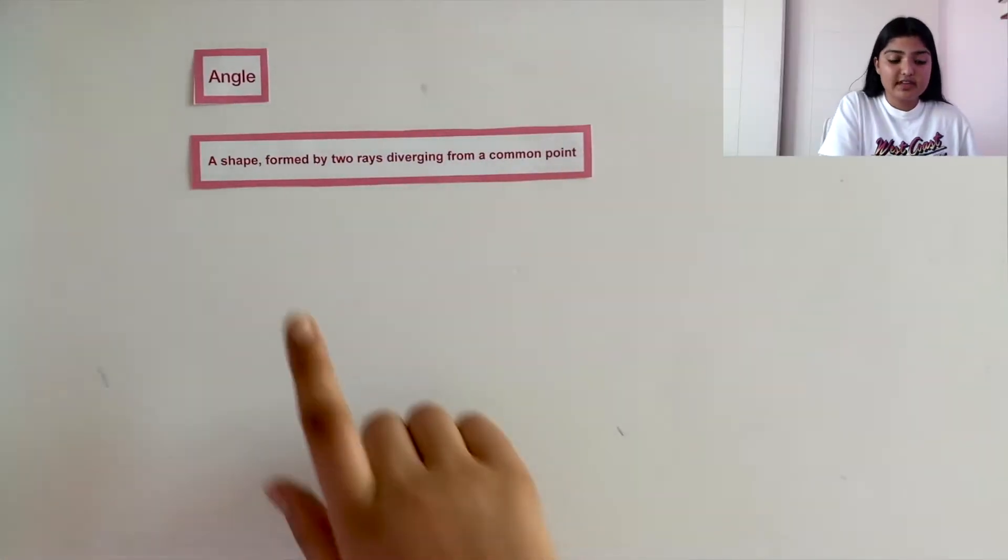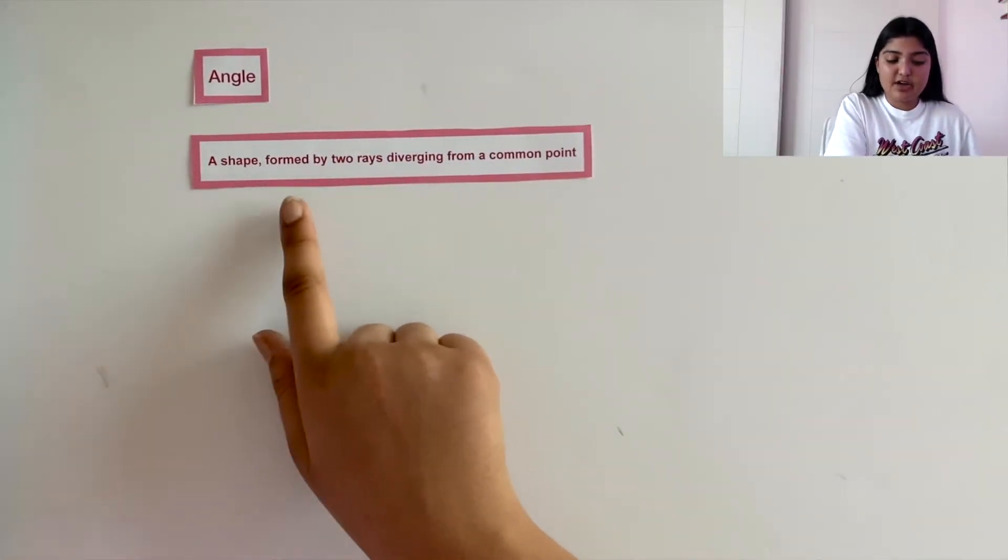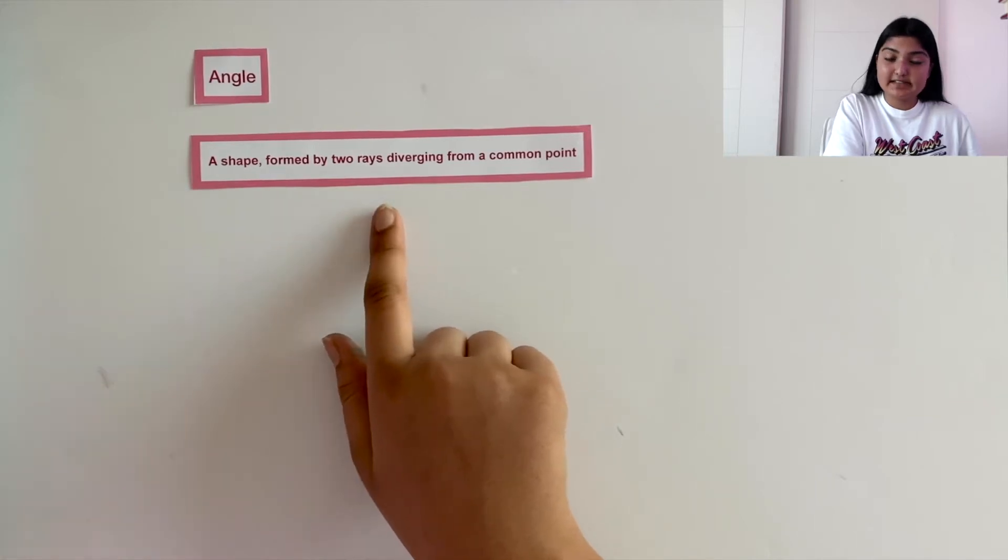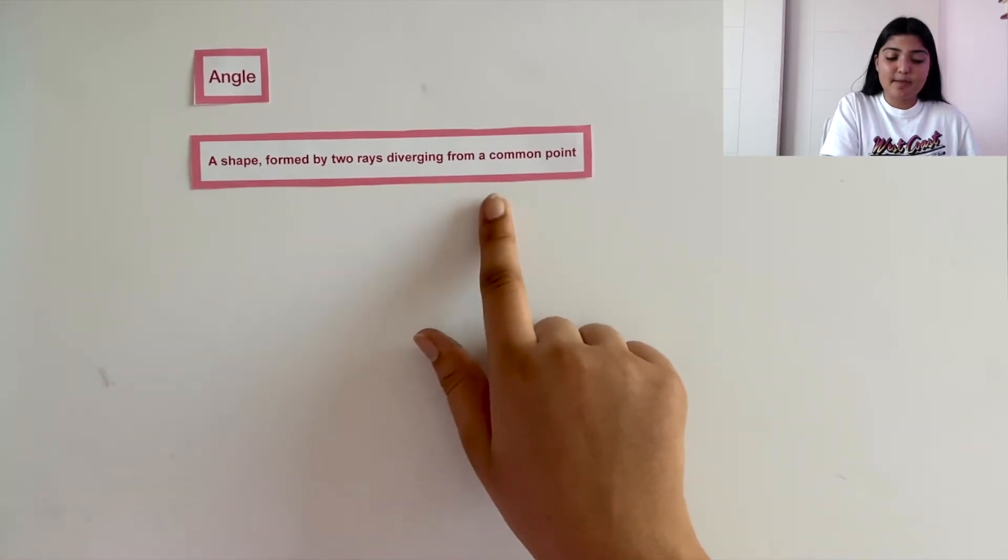Today let's explore angles. But what is an angle? An angle is a shape formed by two rays diverging from a common point.